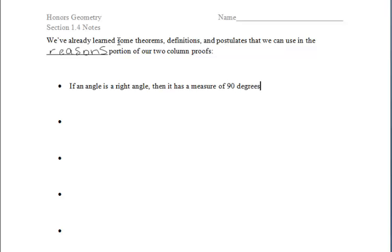The first thing that we discussed in section 1.2 is that if an angle is a right angle, then it has a measure of 90 degrees. Well, since it's a definition of a right angle, we can flip that sentence and say that if an angle has a measure of 90 degrees, then it is a right angle. Definitions are always reversible, and we'll discuss that more in this chapter.